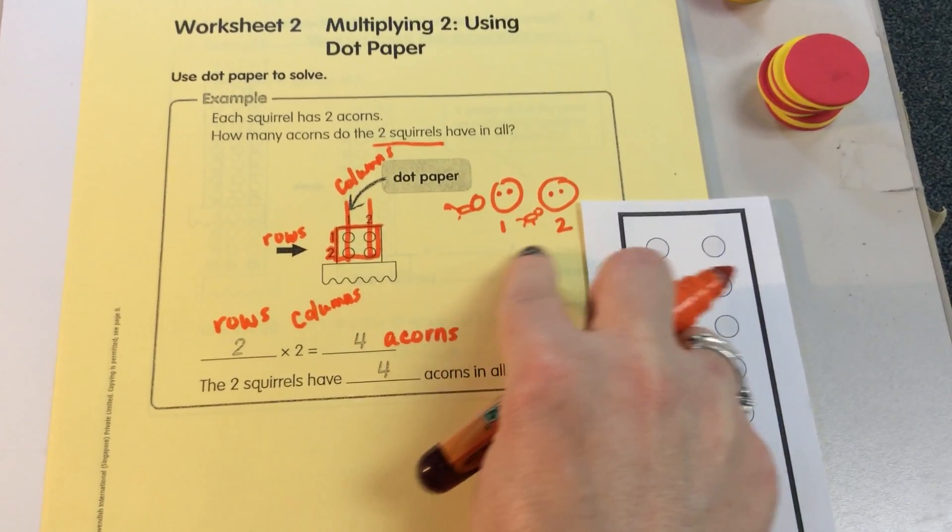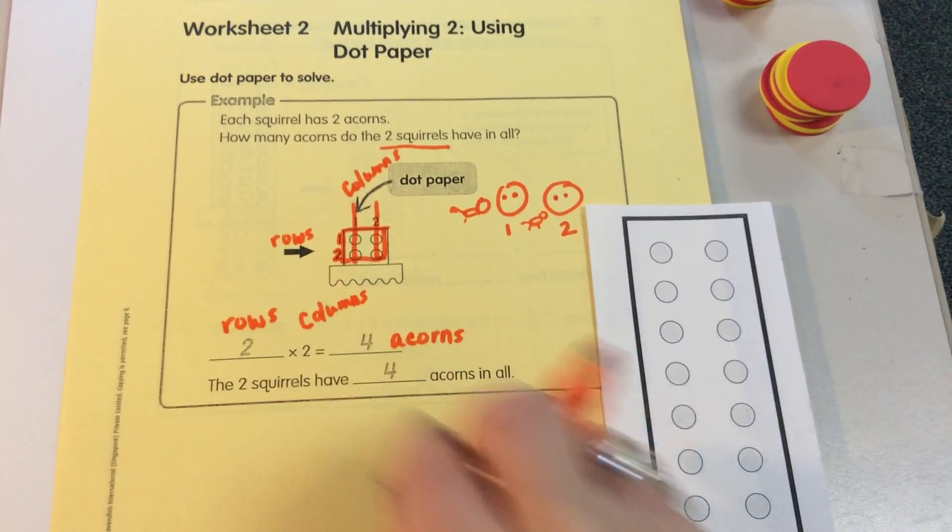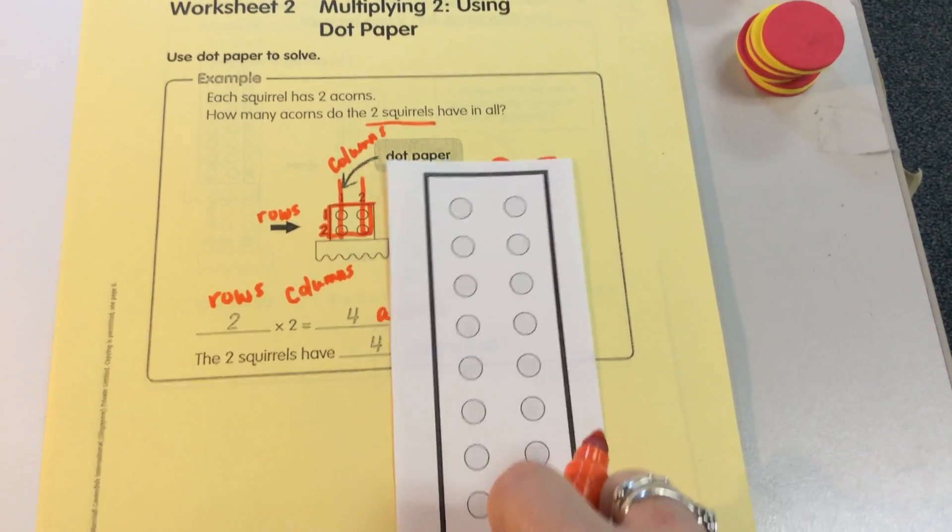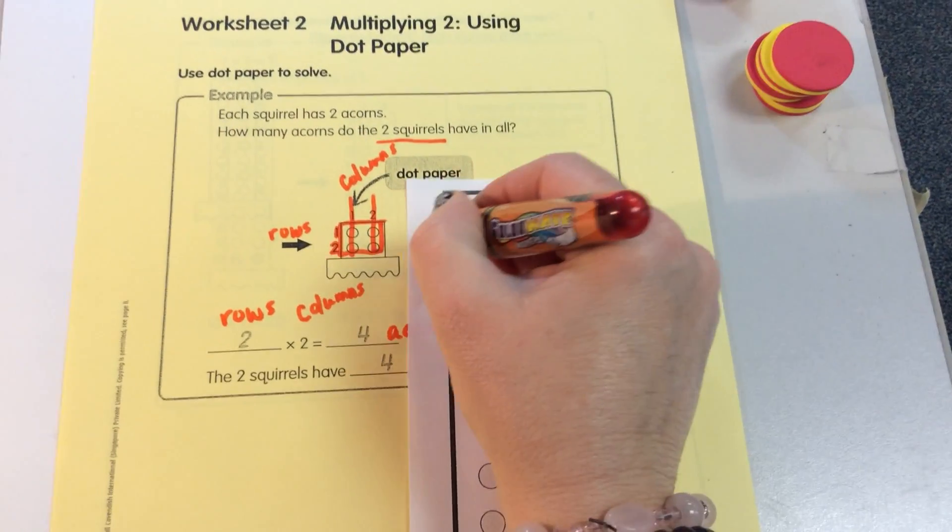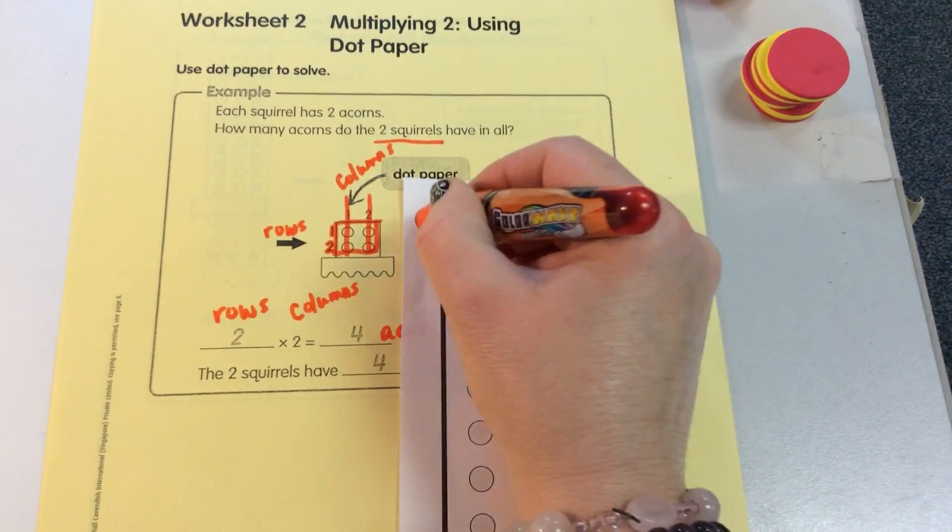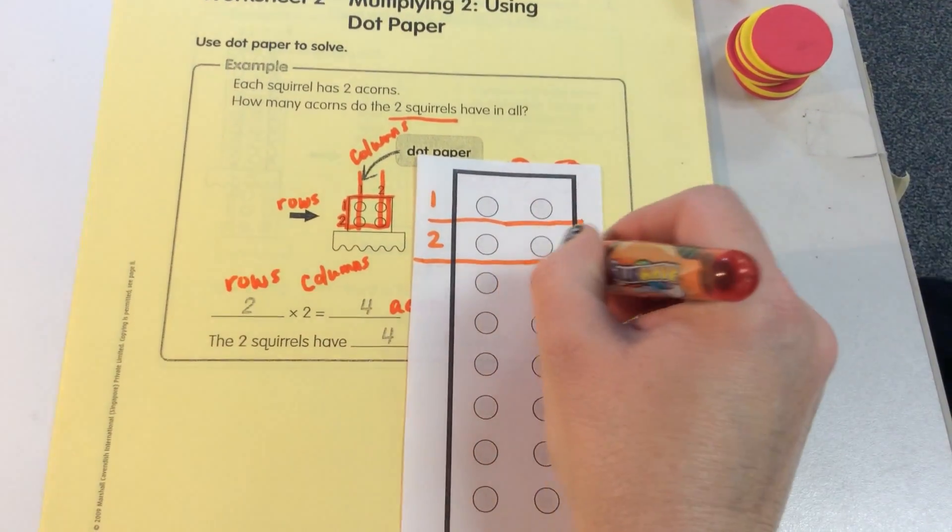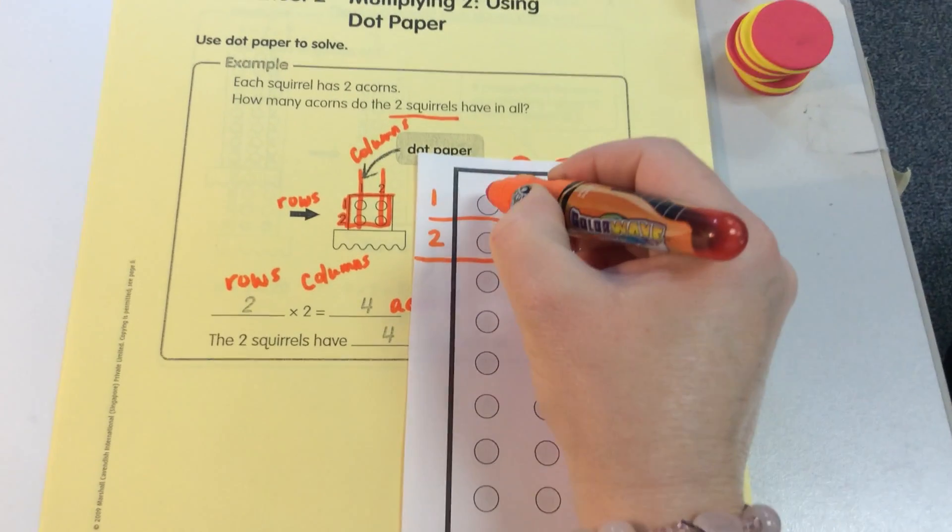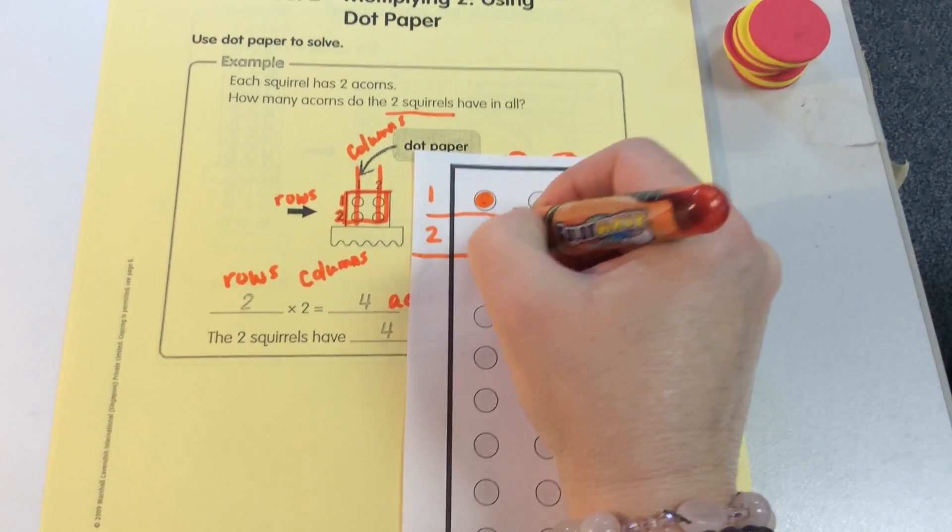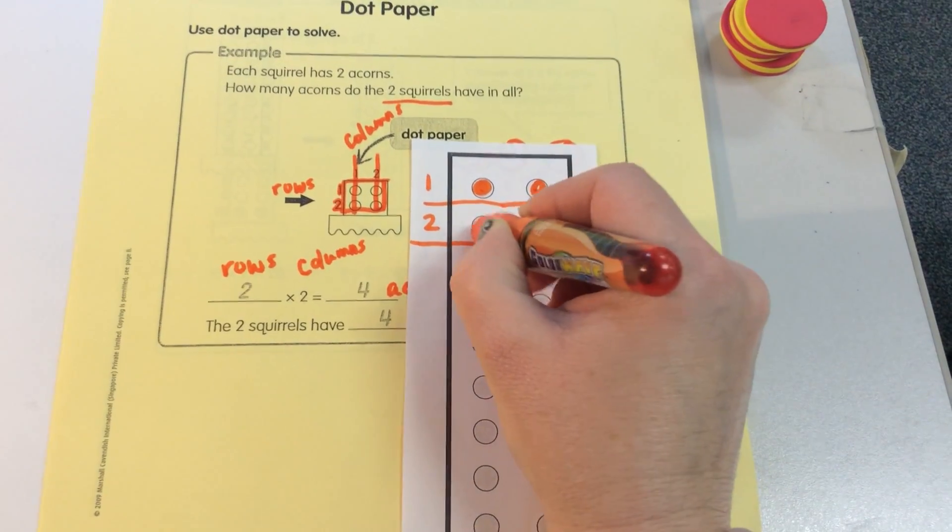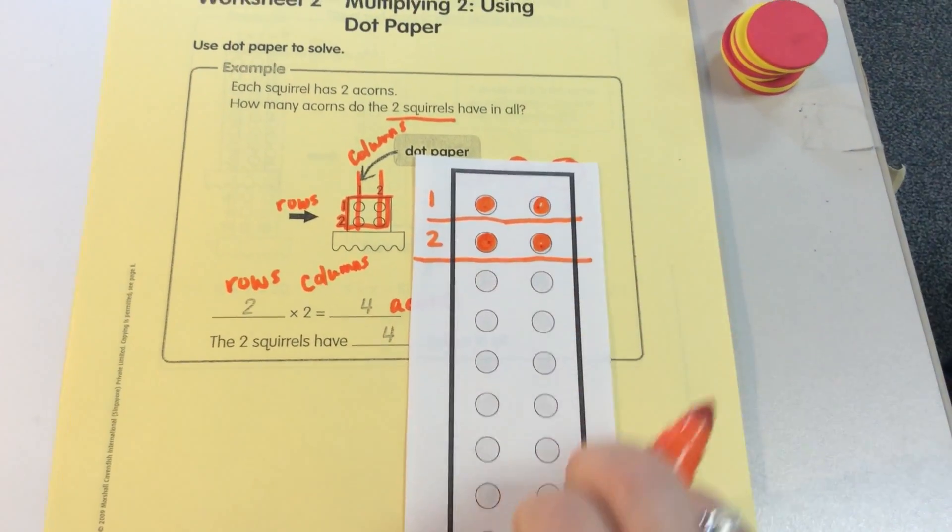We see it both in this picture and we see it using the dot paper. Now this is the dot paper that we're referring to. Now children see this is row 1. This is row 2 and we have 2 squirrels. And each squirrel has 2 acorns. So here you go. So these circles refer to the acorns. And we have 4 acorns.